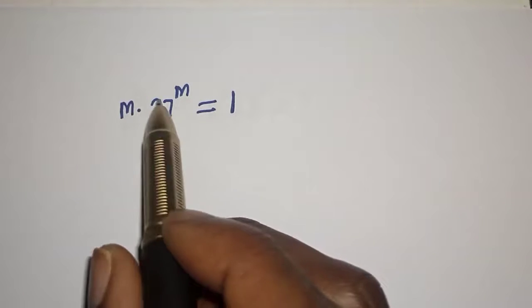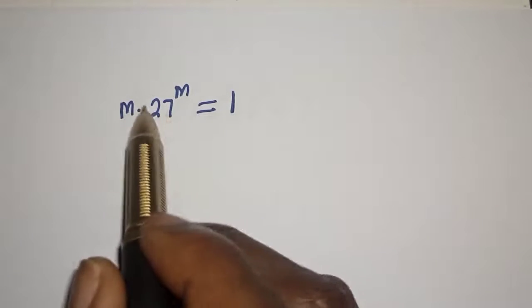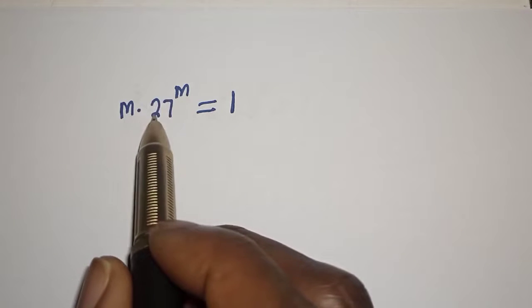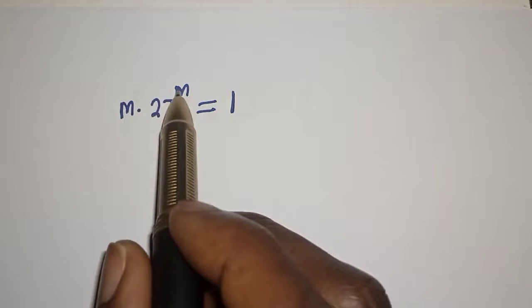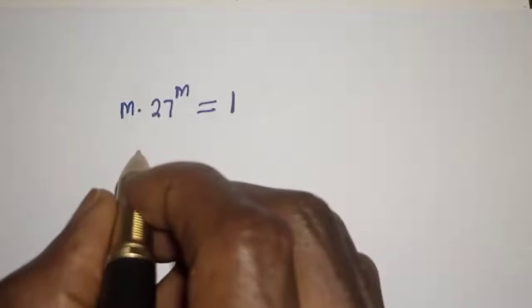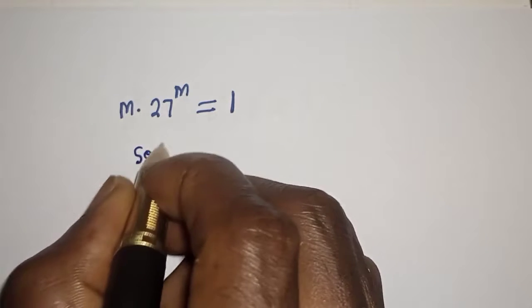Hello, welcome to Magis. In this class I want to find the value of m from this beautiful equation: m multiplied by 27 raised to the power m is equal to 1.